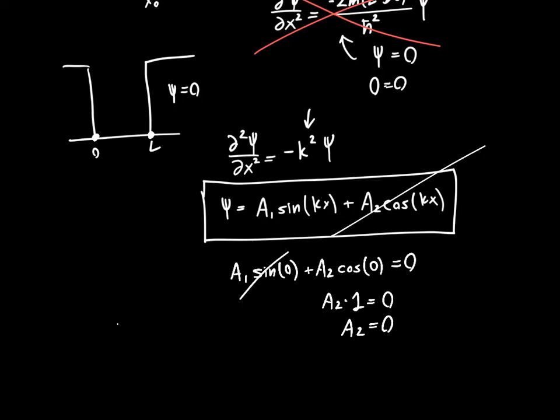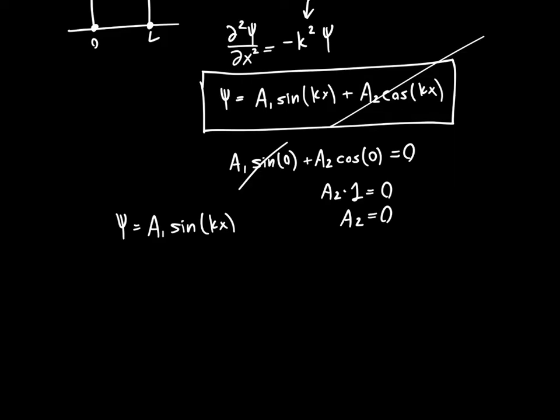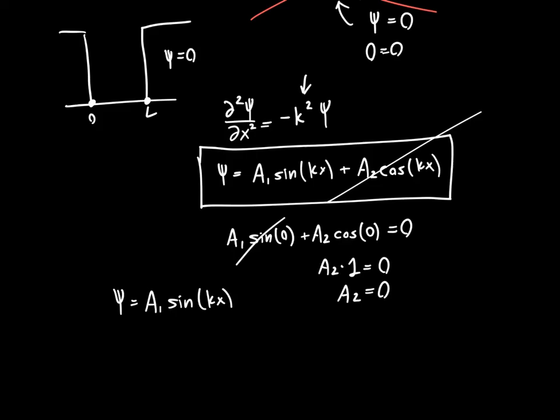So ψ is just equal to A₁ times sine of kx. Now the really interesting part about this is what happens when we say x=L. So if the wave function has to be zero at L, that means that A₁ sin(kL) must equal zero. And we're going to assume that A₁ isn't equal to zero because we don't want the wave function to be zero inside our potential well. So that means that sin(kL) has to be zero. And for that to be true, k times L has to be a multiple of π.